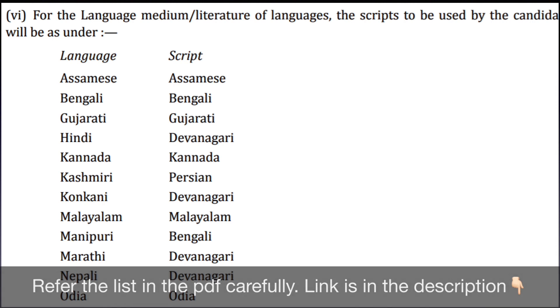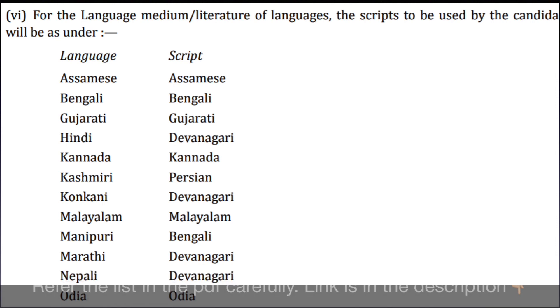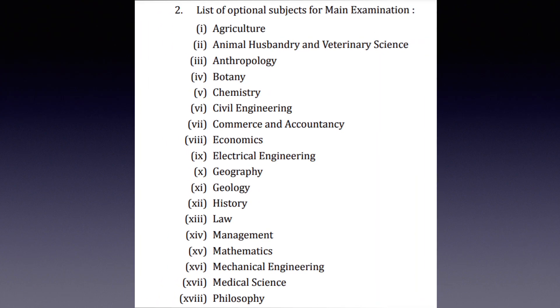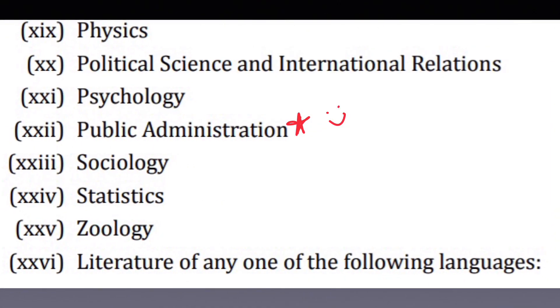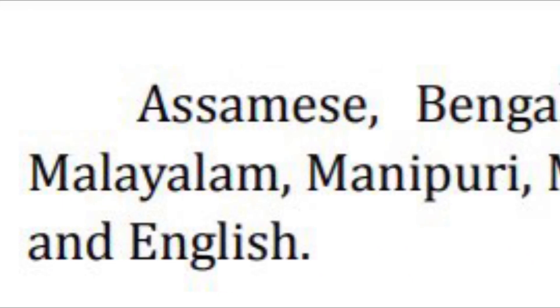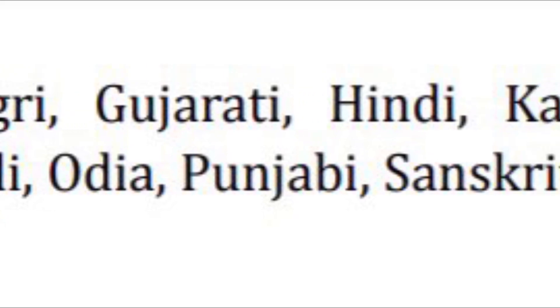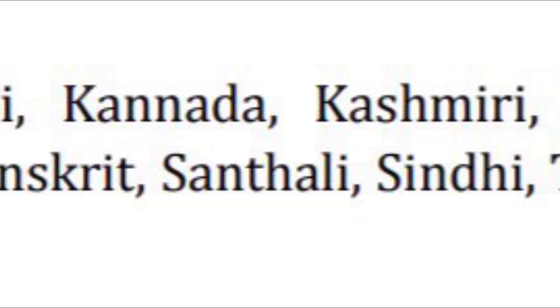Now let's go through the list of languages that you can choose for your language paper. Here are the languages: Assamese, Bengali, Gujarati, Hindi, Kannada, Kashmiri, Konkani, Punjabi, Sanskrit, Sindhi, Tamil, Telugu, and many more. For optional subjects, the list includes Agriculture, Animal Husbandry, Anthropology, Botany, Chemistry, Civil Engineering, and many other subjects. My favorite — Public Administration — is also there. These are your optional subject options, and for those who want to choose a literature optional, these are the languages you can opt for. You can download the PDF and refer to the full list.